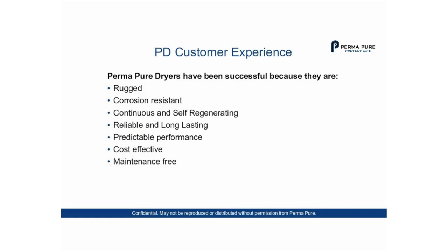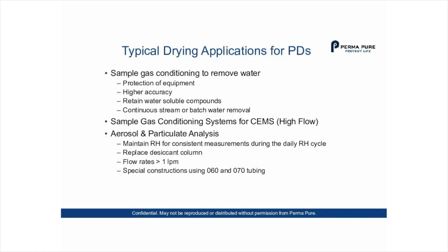In general, having made these PD dryers for over 30 years, they've been proven to be rugged, corrosion resistant, continuous and self-regenerating, reliable and long lasting with proven and predictable performance — meaning the dryer you buy today will perform the same as one bought 10 years ago. They are cost effective and maintenance free. Typical drying applications include sample gas conditioning to remove water for protection of equipment, for higher accuracy, and to retain water-soluble compounds, used in continuous stream or batch water removal.